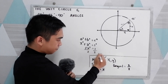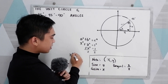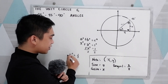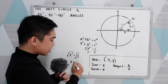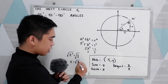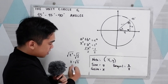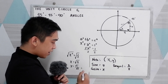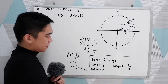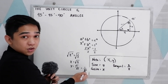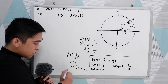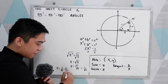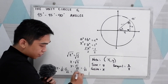Now divide by 2. We have x squared equal to one half. To remove the square, extract the square root, so x equals the square root of one half, which equals 1 over the square root of 2. To rationalize, multiply by square root of 2 over square root of 2, and that gives us square root of 2 over 2.